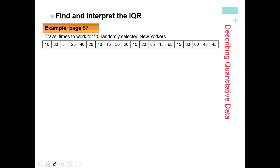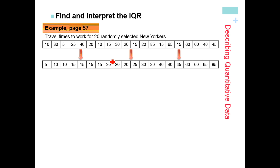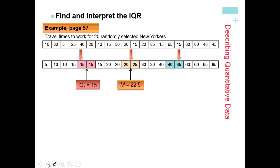One of the most popular measures of spread is the IQR — the interquartile range — which is the range of the middle 50%. It's used all the time with the median. Using the same data put in order from 5 to 85, here again are our two middle pieces of data where we found our median of 22.5.